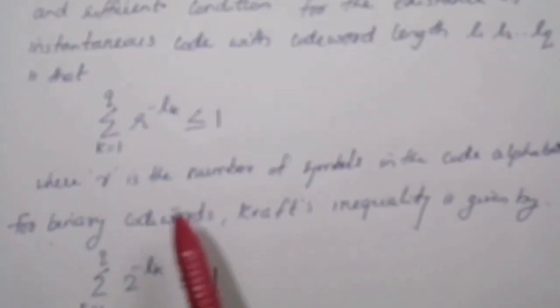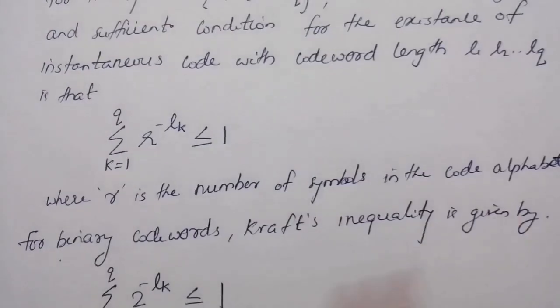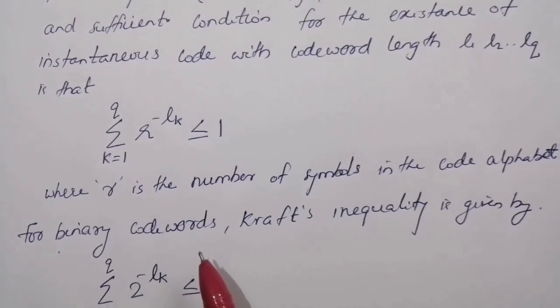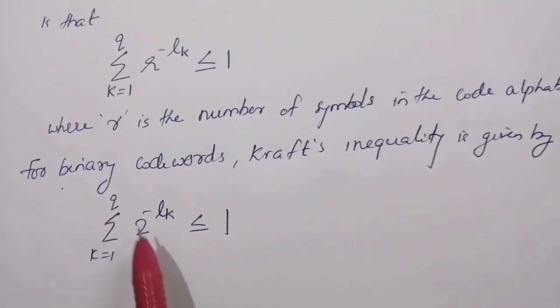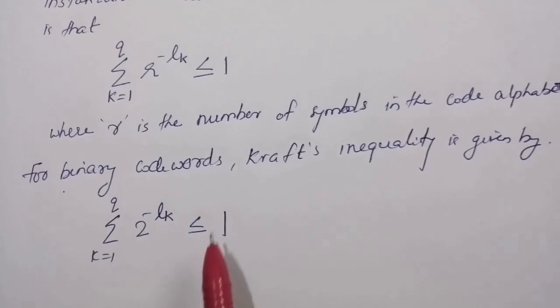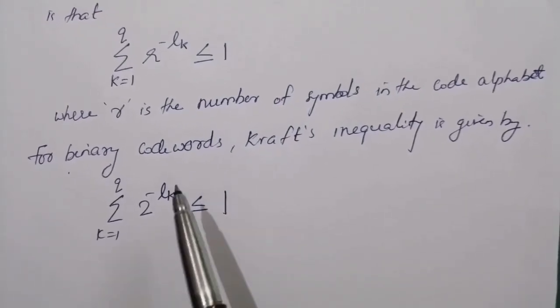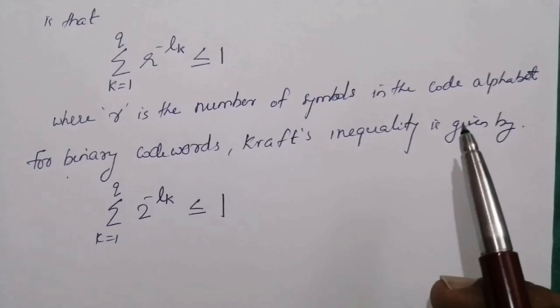Where R is the number of symbols in the code alphabet. For binary codewords, Kraft's inequality is given by sigma K equals 1 to Q, 2 raised to minus LK, less than or equal to 1, where LK is the length of the kth codeword.